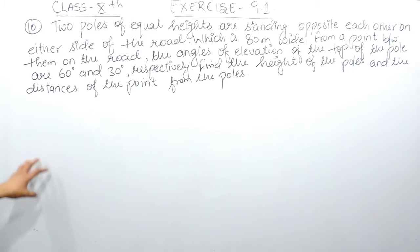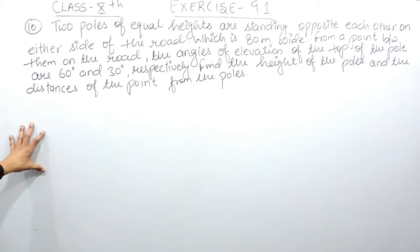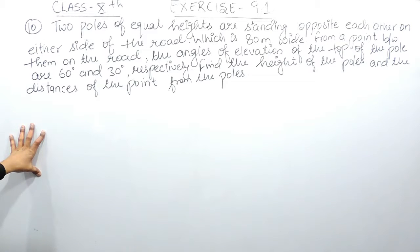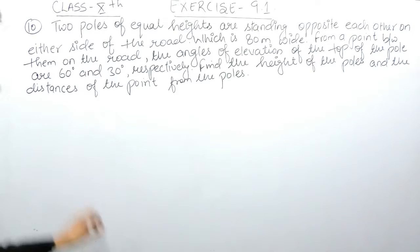From a point between them on the road, the angles of elevation of the top of the poles are 60 degrees and 30 degrees respectively. You have to find the height of the poles and the distance of the point from the poles.